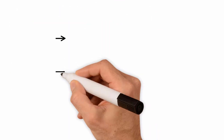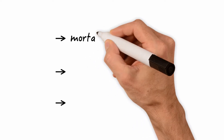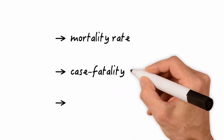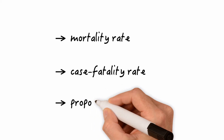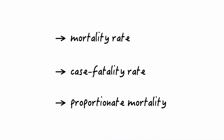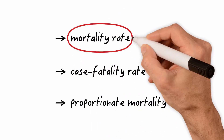In the following minutes we're going to cover three measures of mortality. Two of them are rates, one is not. We're going to cover the mortality rate, the case fatality rate, and the proportionate mortality. Let's start out with mortality rates.